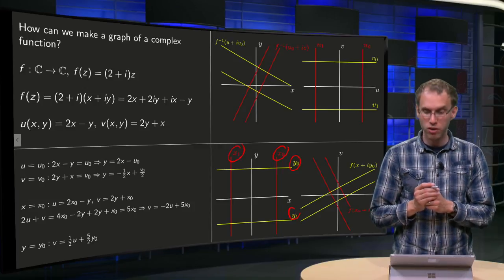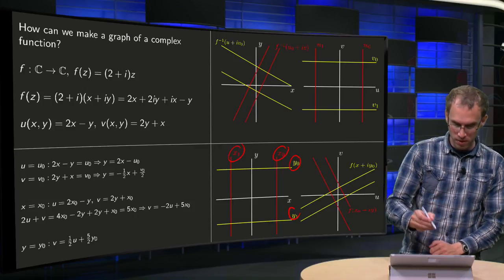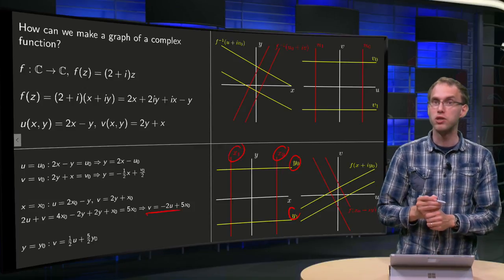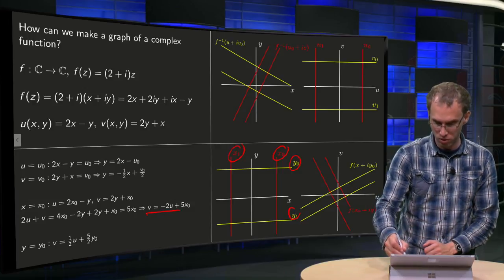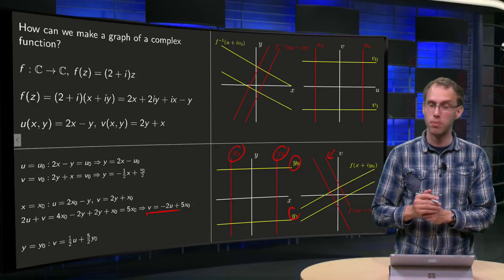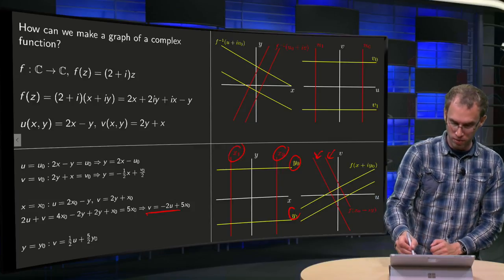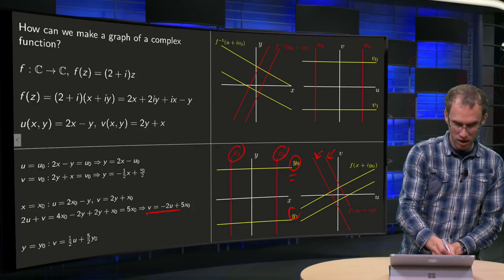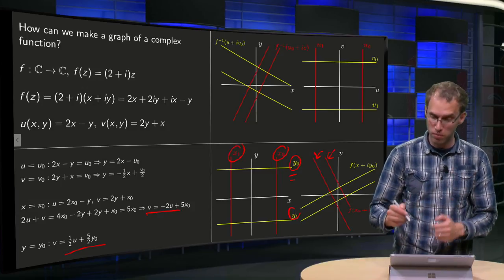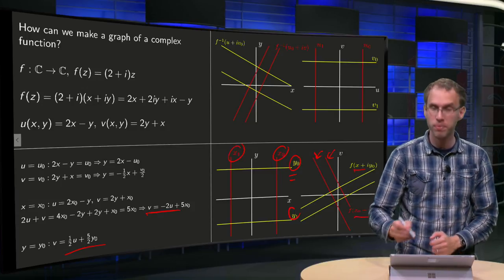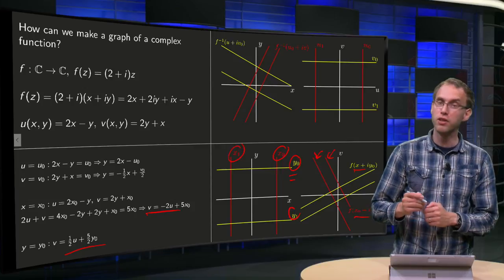The red curve is constant x, are mapped to the curves v equals minus 2u plus 5x₀, so those curves over here, the slope minus 2, and the yellow curve is constant y₀, are mapped also two lines, but now with the slope one half, those lines over here, in the uv plane.